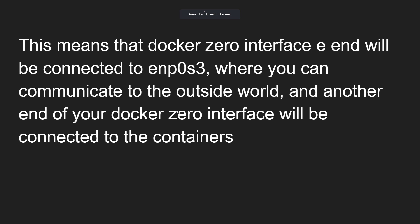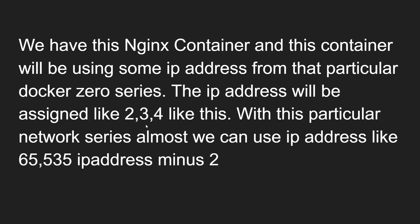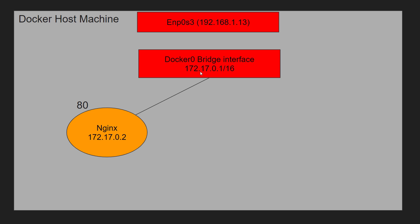In this diagram, the internet service provider connects to enp0s3, and this entire setup is the Docker host machine — our Ubuntu server. The enp0s3 connects to the ISP on one end and to docker0 on the other. Docker0 is then connected to the containers. For example, the nginx container uses an IP address from the 172.17.0.x series — specifically 172.17.0.1 is the private address assigned to the docker0 interface, and containers attach to it from the other end.